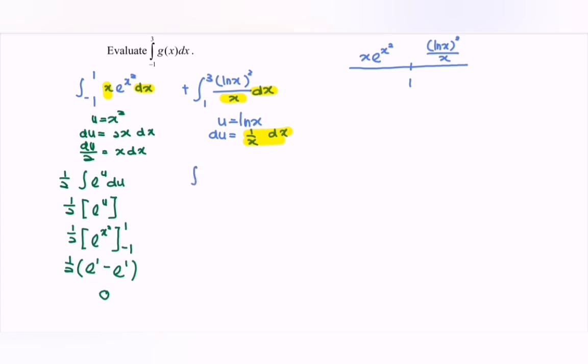So integrate, we have u squared with respect to u. Integrate the u squared, and we have u to the power of 3, multiply by 1 over 3.